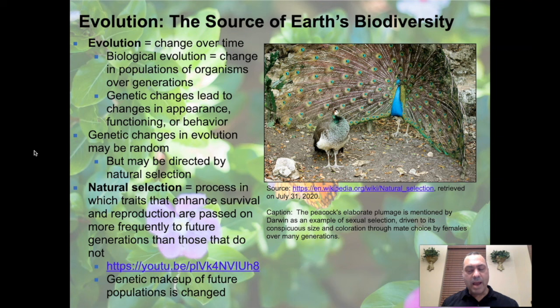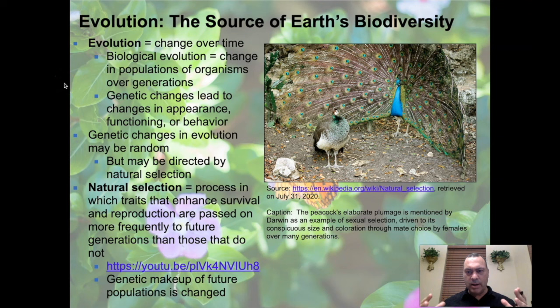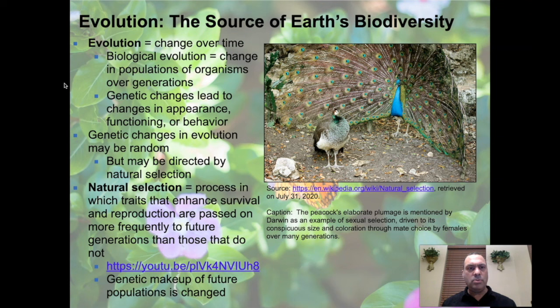Now that we've defined species and populations, let's dive into evolution — the focus of most of this lecture. Evolution is simply change over time in biological systems. Biological evolution is the net change in populations of organisms over generations. Genetic changes lead to changes in appearance, functioning, and behavior. We don't look the same over time, we don't function the same way, and we might not have the same behaviors.